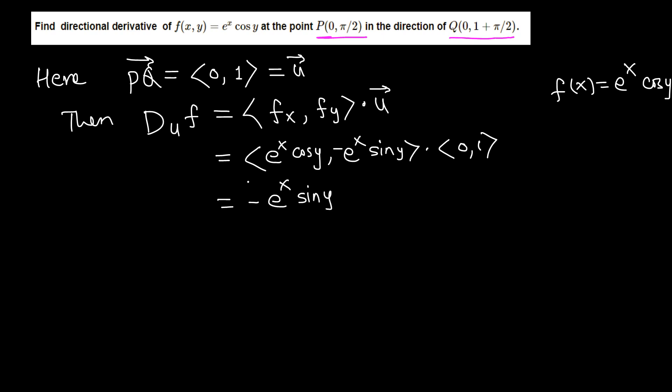So this is the directional derivative at any point (x, y), but we were supposed to find it at this point P(0, pi/2). So we plug in x equals 0 and y equals pi over 2. Thus the directional derivative of f at (0, pi/2) is just negative e^0 sine(pi/2).